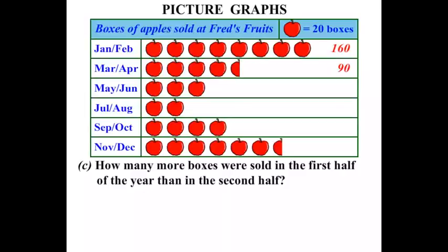How many more boxes were sold in the first half of the year than in the second half? Let's work out the rest of the periods first. In May-June, each apple is 20 boxes: 20, 40, 60. In July-August: 20, 40. In September-October: 20, 40, 60, 80, 100, 120, and then half an apple worth 10 boxes, so 120 plus 10 is 130.